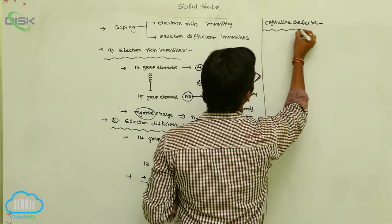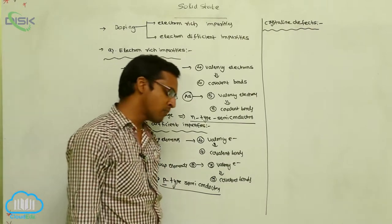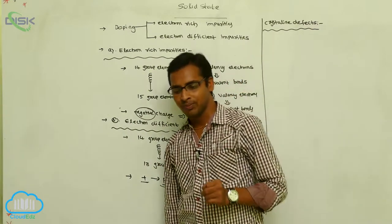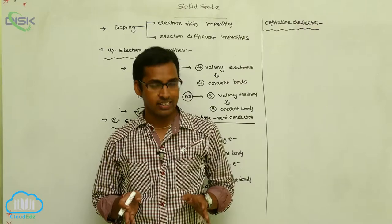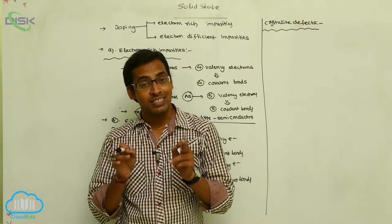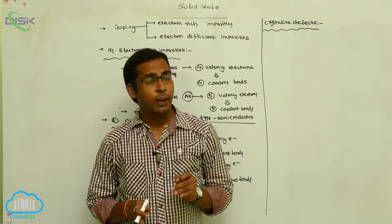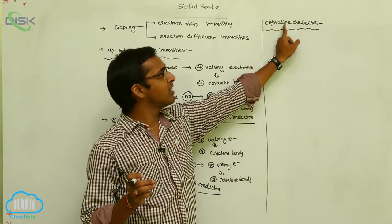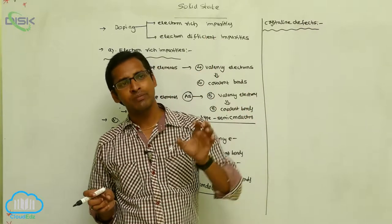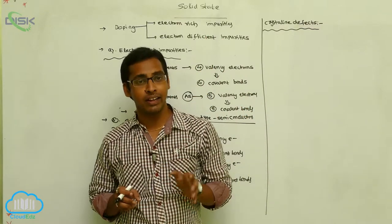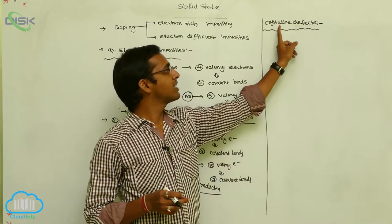Next topic is crystalline defects. Generally, solid-state substances are of two types: amorphous solid and crystalline solid. Crystalline solids have atoms, molecules, or ions arranged in a regular pattern showing long-range order — when this is perfect, there is no defect. However, some crystalline solids show defects because the arrangement of atoms, molecules, or ions is in an irregular pattern, showing both long-range and short-range order, causing crystalline defects.